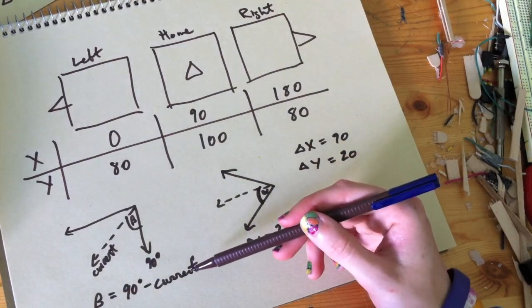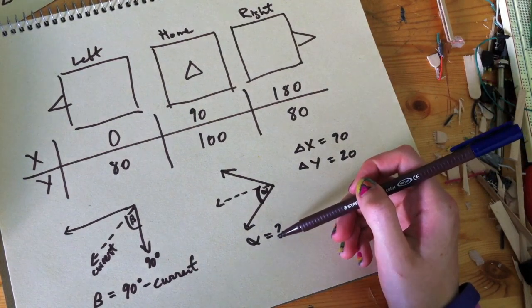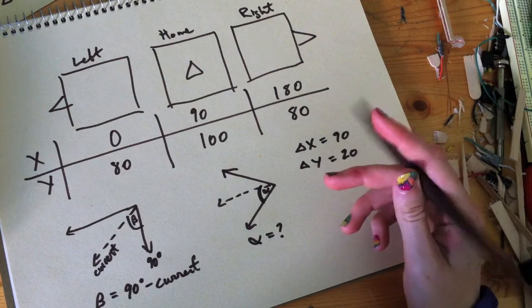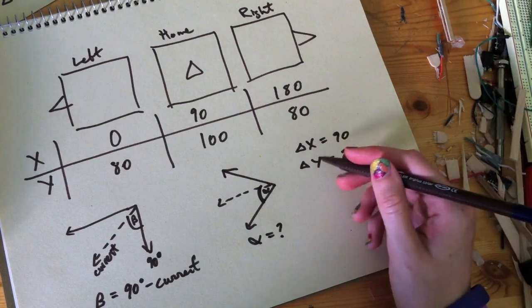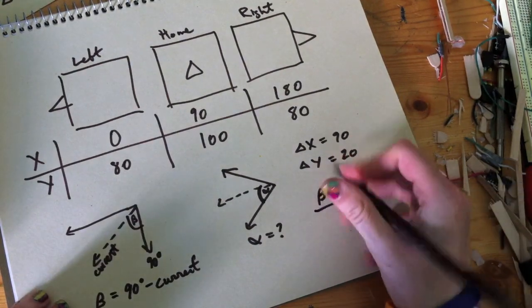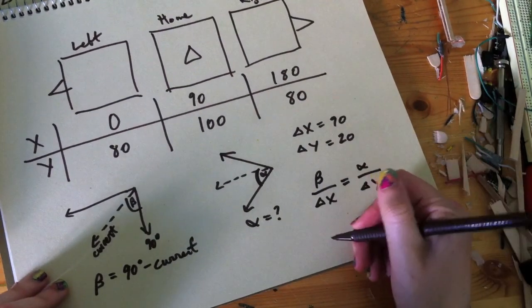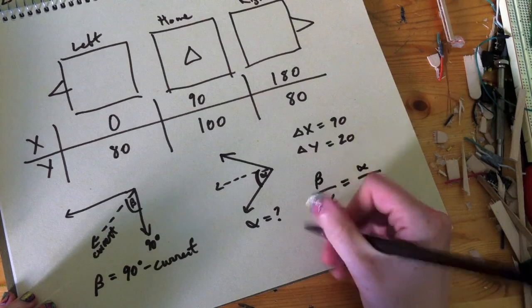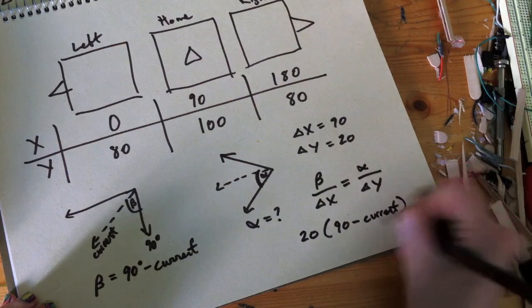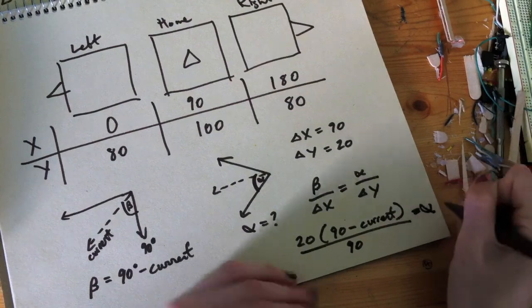We have the degrees of change for the X. We don't have the degrees of change for the Y, but we do have the change in the X and the change in the Y. So we could just call this a linear proportion and then find the alpha number. So this would just be beta over delta X is equal to alpha over delta Y, which in the end this would turn out to be 20 times 90 minus current divided by 90 gives us alpha, which is what we're looking for.